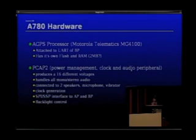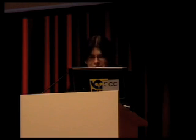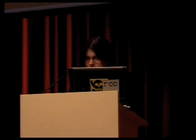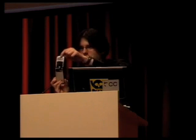The AGPS processor is another ARM7-based CPU with 2MB of flash and RAM, attached via UART to the baseband processor. There's also a PCAP2 chip for power management, clock, and audio peripherals — it produces 16 different voltages for the phone. It handles all mono and stereo audio, including stereo for MP3 playback and mono for ringtones. It handles clock generation and backlight control — there are at least two different backlights: one for the LCD display, and one for the buttons in the flip, with independent pulse width modulation control.